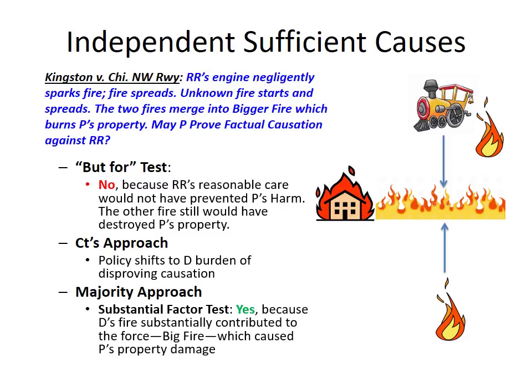Our question now is simply whether the railroad's negligence was a substantial factor in burning down the plaintiff's property. If you trace the chain of links from the defendant's conduct to the plaintiff's property damage, you can see that the railroad did start a fire. That fire made a substantial contribution to the bigger fire that ultimately burned down the plaintiff's house. So the defendant's negligence was a substantial contributing factor to the fire that caused the plaintiff's property damage, getting us around the but-for conundrum.